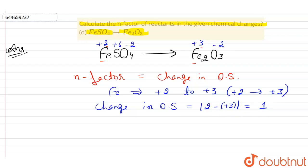So now in the reactant there is only one Iron atom, one Fe atom. So we have calculated the change in oxidation state for one Iron atom that is 1, so 1 into 1 is already 1.